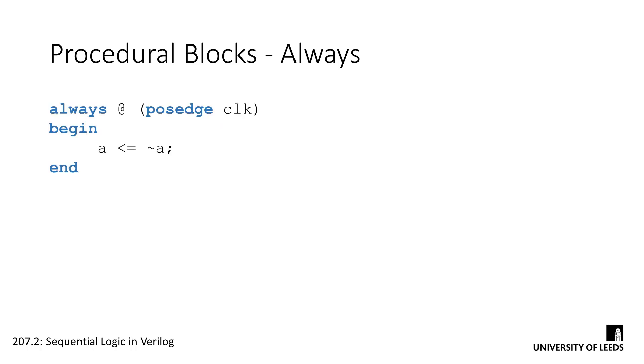We can trigger code on the positive edge of a signal, the negative edge, or both edges, provided that the signal is asynchronous, or in other words, not a clock.